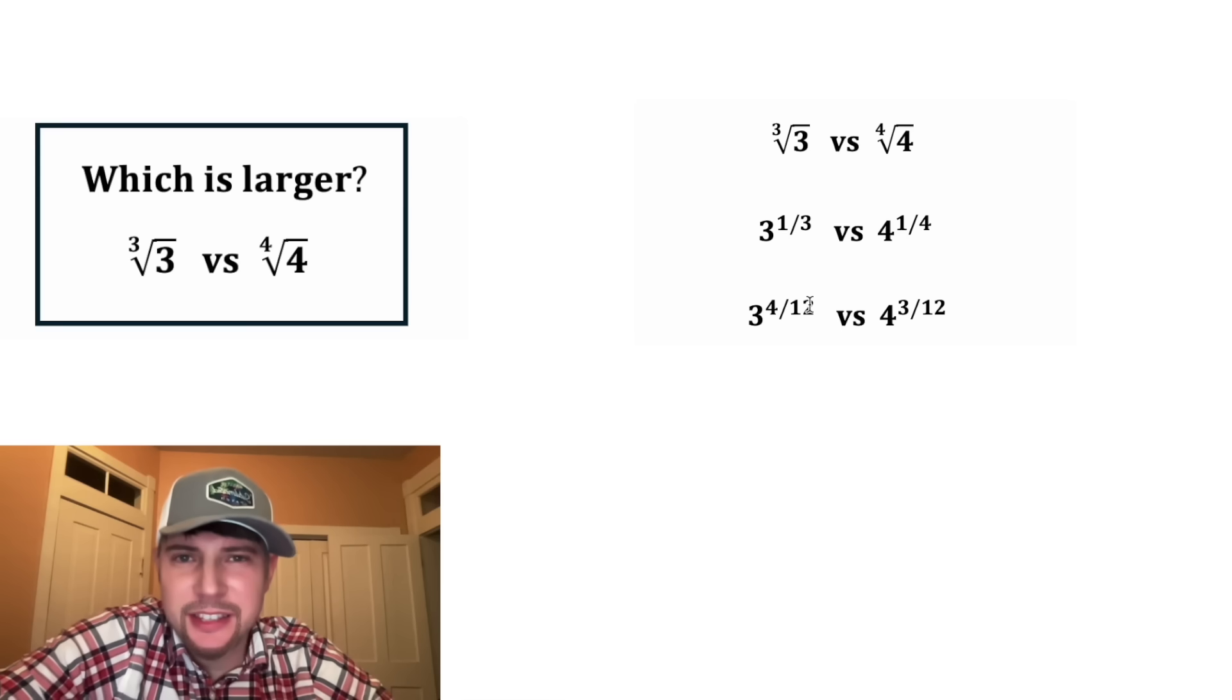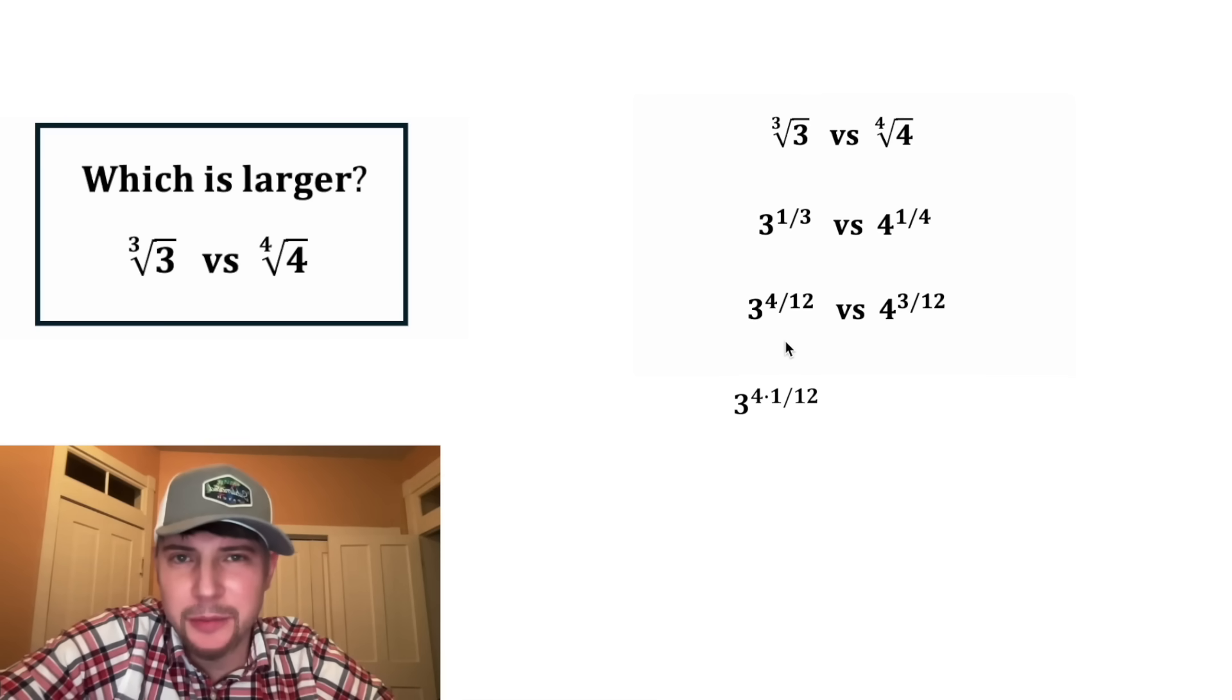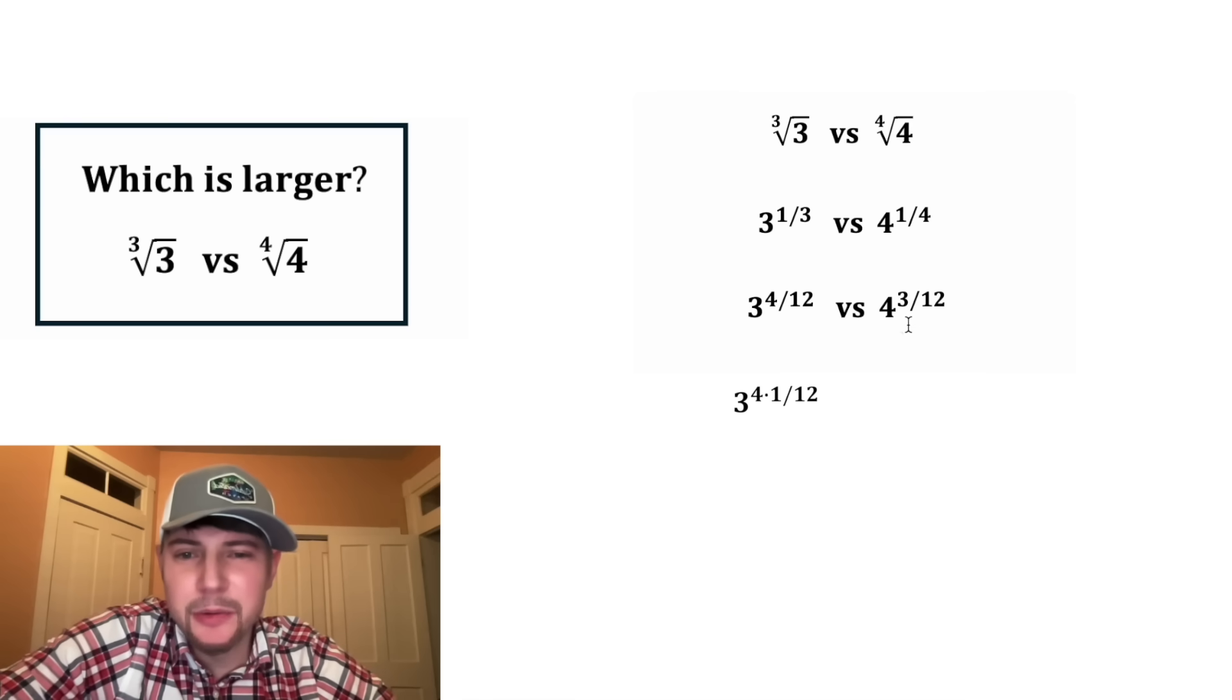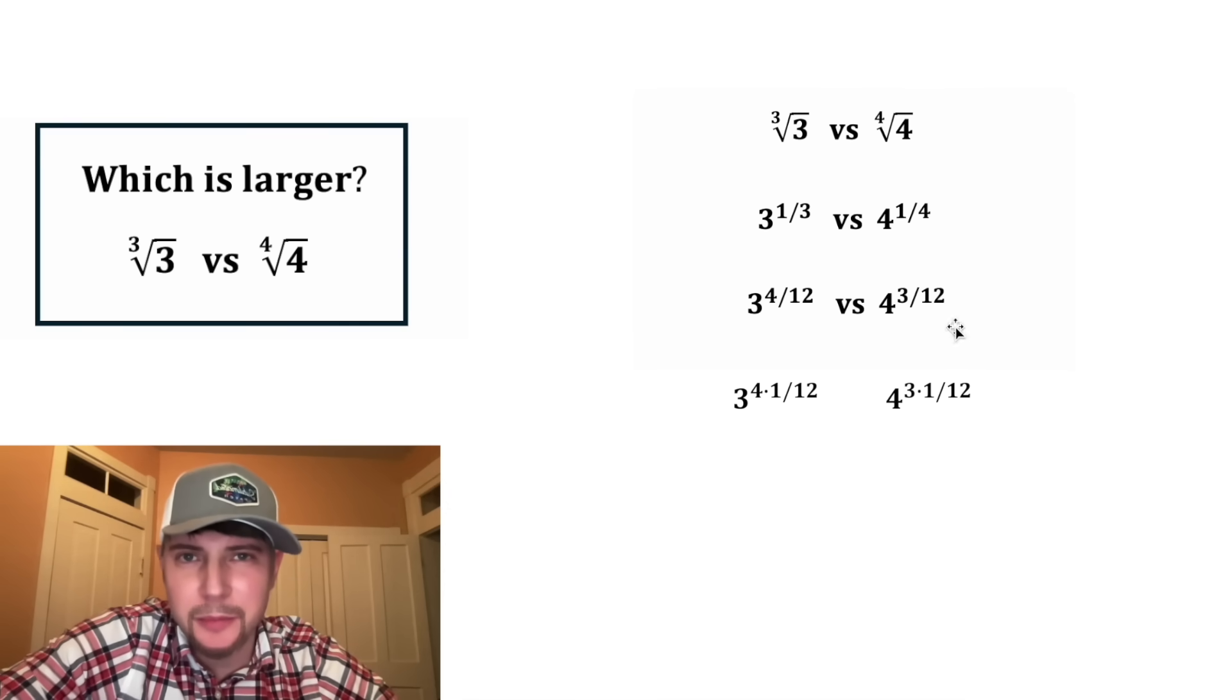And next, 4 twelfths, that's the same thing as four times 1 twelfth. So we can rewrite three to the 4 twelfths as three to the 4 times 1 twelfth. And then on this side, we can rewrite four to the 3 twelfths as four to the power of three times 1 twelfth.